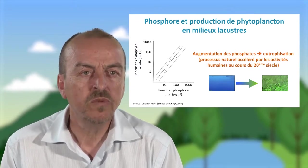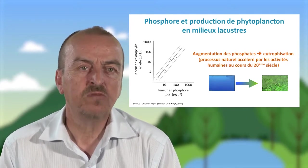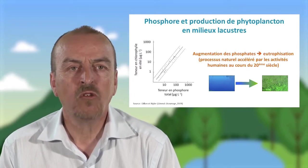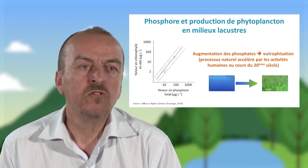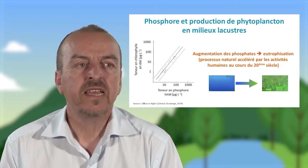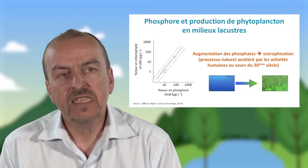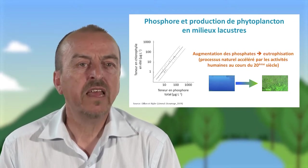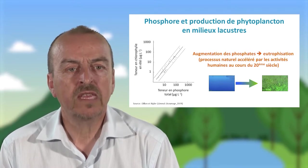Des organismes microscopiques que l'on appelle le phytoplankton. Les chercheurs se sont donc rendu compte qu'il y avait une relation positive entre la teneur en phosphore dans les lacs et la quantité de phytoplankton dans ces mêmes lacs. Cette mise en évidence du rôle de cette ressource phosphore est arrivée à un moment où le développement des activités humaines, l'urbanisation, le développement d'une agriculture plus intensive, entraînaient une augmentation des apports de phosphore dans les milieux aquatiques de la planète.